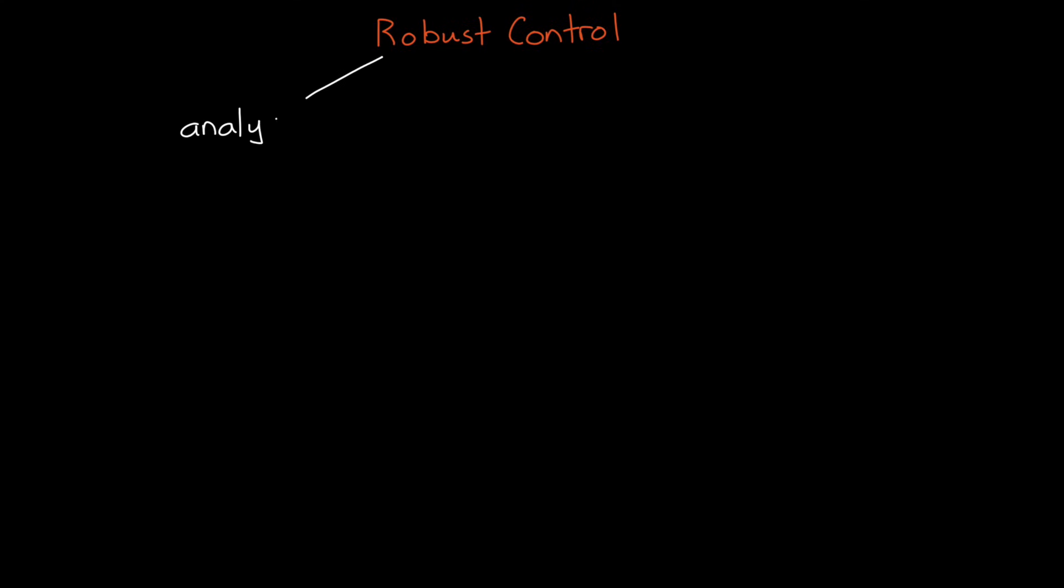So far, we've only introduced the analysis portion of robust control theory, that's figuring out the system that we have. But the other half of robust control is synthesis, which is creating a system specifically with robustness in mind, or designing a controller that produces the needed amount of margin in the system.